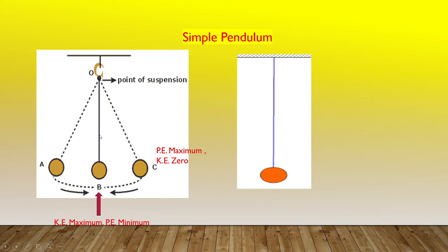Left to itself, the bob occupies the position OB which is the mean position or equilibrium position.